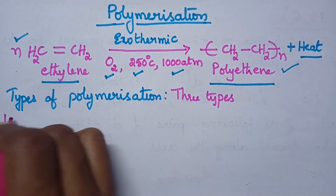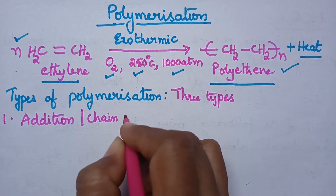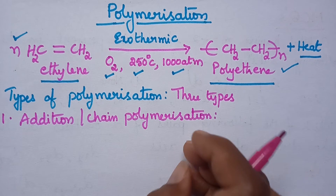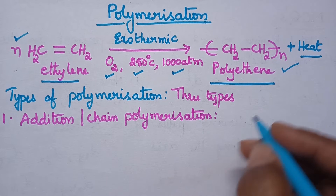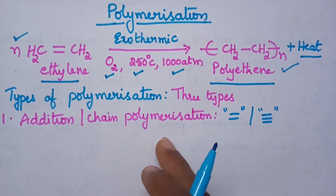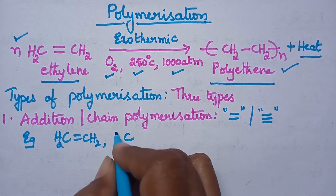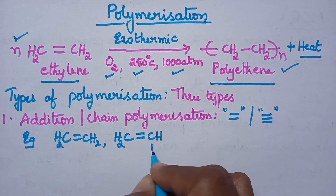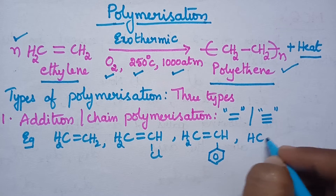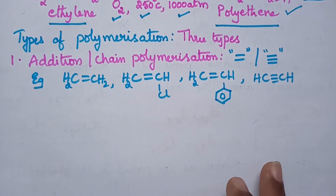Coming to addition polymerization, it is also known as chain polymerization. In particular, monomers with unsaturation — that means monomers containing a double bond or triple bond — undergo addition polymerization. That means monomers such as ethylene, vinyl chloride, styrene, and acetylene undergo addition polymerization. Let us see the formation of polyvinyl chloride.